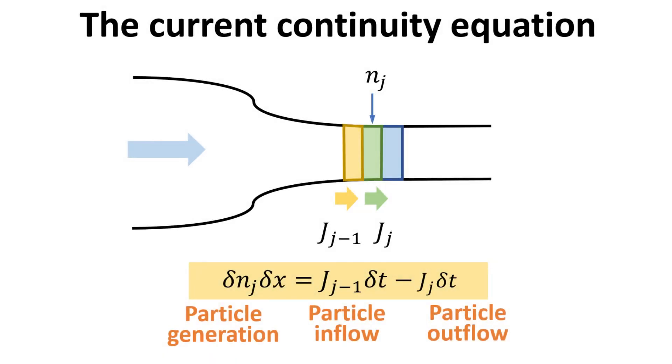If the particle inflow into the pillbox j does not balance the outflow, then the particle density in the pillbox j would have to change to account for the imbalance. We write down this particle conservation as follows, where the total change in the number of particles, is given by the change in particle density in j multiplied by the length of the pillbox. This has to be balanced by the number of particle being injected and extracted out of the pillbox j, expressed in terms of their respective current densities multiplied by the small change in time delta t.